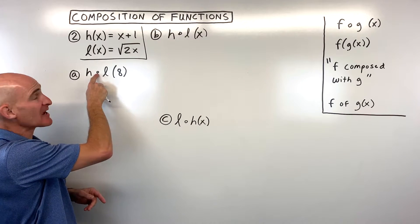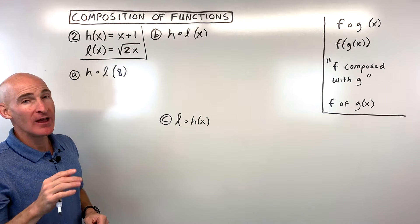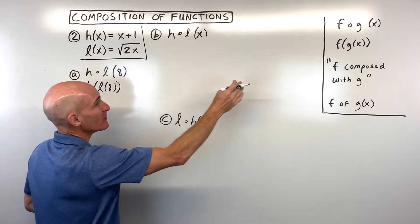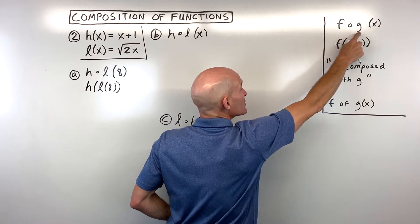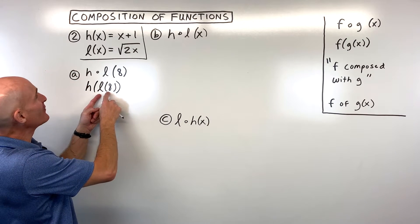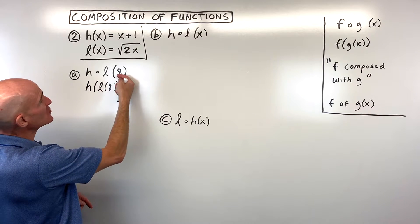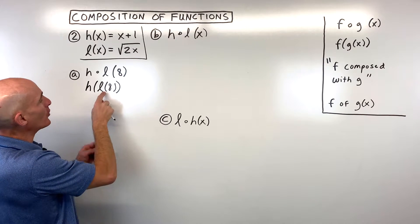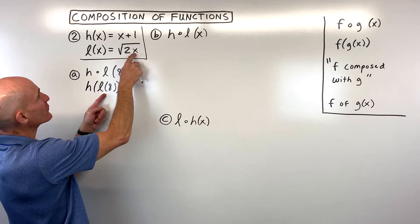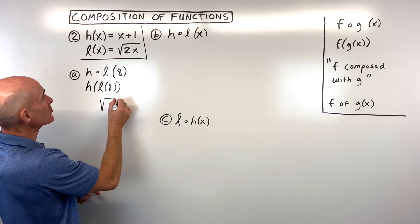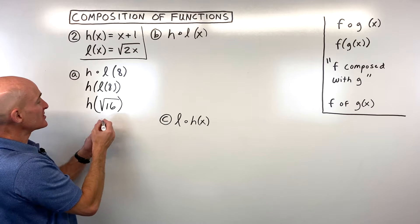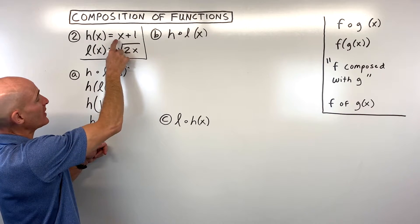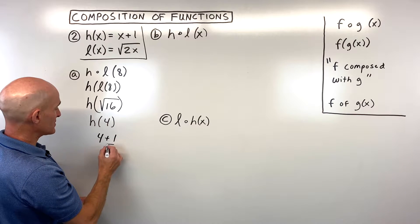Some students see the small circle notation and think it looks like a multiplication dot — but it's not multiplication. It's saying h of l of 8. Also, people sometimes read the circle as the letter O, like 'what's h-o-l.' Starting on the inside with our l function: whatever is here goes in for x on the right, so that's the square root of 2 times 8, which is the square root of 16, which is 4. That answer goes into h: 4 plus 1 equals 5.